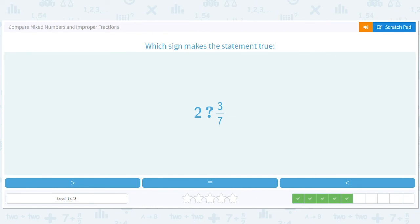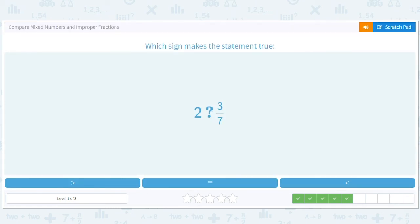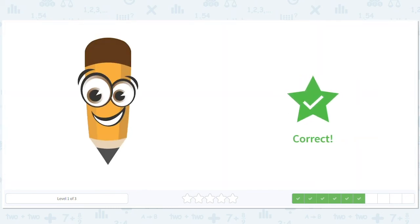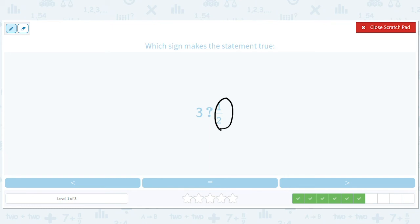Okay. So is two less than, greater than, or equal to three-sevenths? Well, three-sevenths is less than one, right? So two is definitely greater than three-sevenths. Again, this is clear, right? One-half is less than one, so three is definitely greater than one-half.